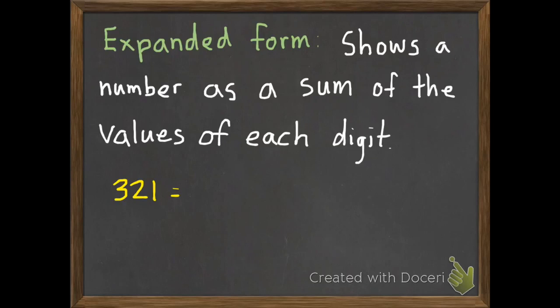Starting on the left, with that 3, the digit is 3, we want to show the value. That was what we did in lesson number 1. The value of that digit is 300. And we're going to find the sum, so that means we're going to add. 300 plus our next digit, which is a 2, but its value is 20, plus our last digit of 1, which has a value of 1. So, 300 plus 20 plus 1 is the expanded form of 321.